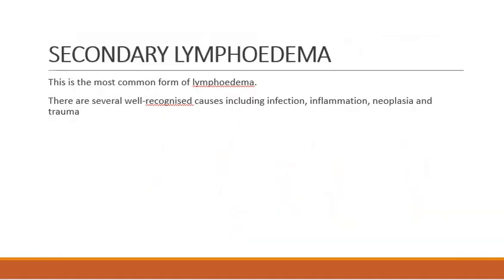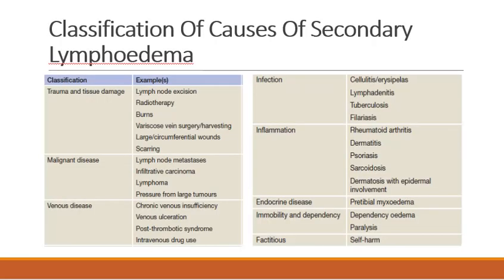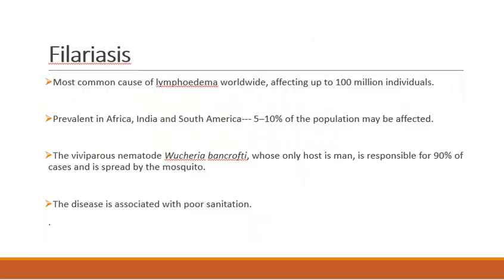Secondary lymphedema is the most common form of lymphedema. Several well-recognized causes include infection, inflammation, neoplasia, and trauma. These include: trauma and tissue damage such as lymph node excision, radiotherapy to lymph nodes, burns, varicose vein surgery, and scarring; malignant diseases such as carcinoma breast, infiltrative carcinoma, and lymphoma with lymph node metastasis; venous diseases like chronic venous insufficiency and venous ulceration; different infections; and inflammatory conditions like rheumatoid arthritis, dermatitis, psoriasis, endocrine diseases causing pre-tibial myxedema.